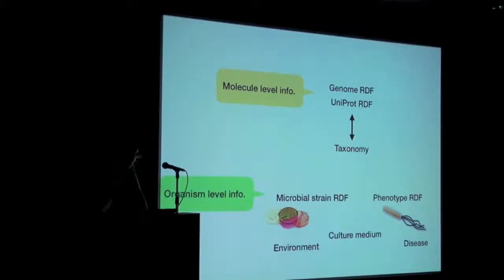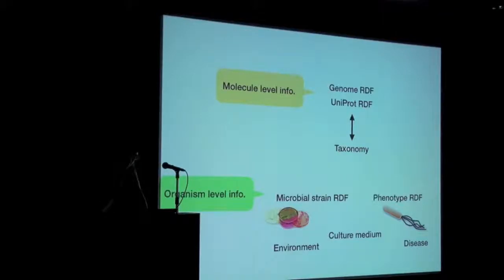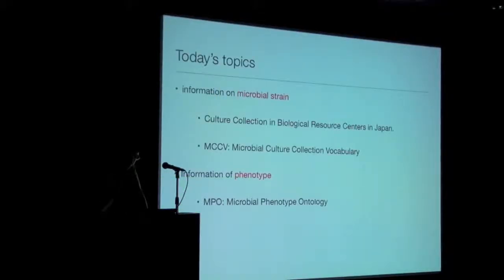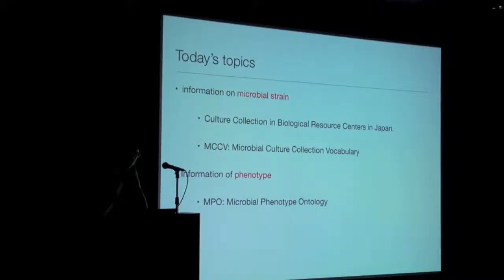As part of the effort, we have been developing data in RDS and ontologies for describing organic-related information of microbiome species. I will focus on two topics in this presentation. The first is our effort for constructing microbiome strain information, which is provided by two institutions in Japan. The second is another effort for constructing ontology for microbiome phenotypes.